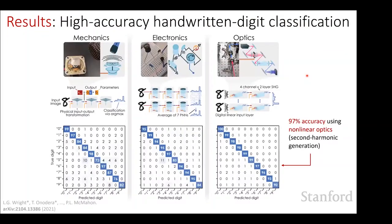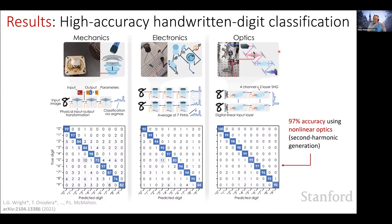Question: How do you feed pictures — actual pixels — into these physical models? The input data is a 2D image that can be flattened into a 1D vector of numbers. For the optical system, we fit the image into part of the frequency spectrum — the x-axis is wavelength, one-dimensional, and we encode the flattened image into that part of the spectrum. For electronics and mechanics, you have a time-varying voltage or current waveform and feed the flattened image vector as a voltage as a function of time.